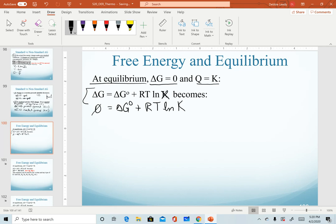And I just realized I have a typo in here. That is supposed to be the letter Q. I apologize for that. And so substituting in, our delta G goes to zero, and our Q goes to K at equilibrium.